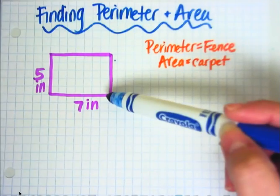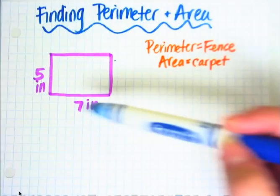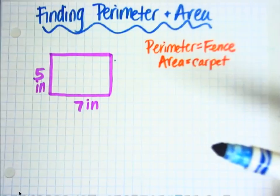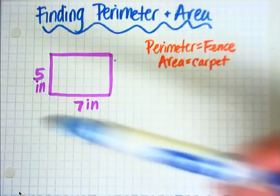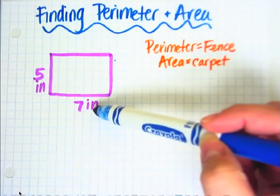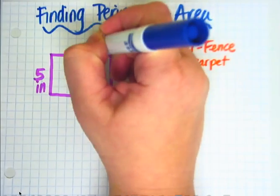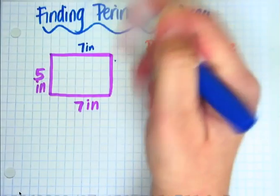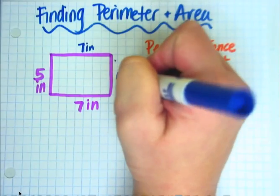So this is our rectangle. The dimensions are 5 inches by 7 inches. Since we know about rectangles, we know that seeing the 7 here means that the other side is 7 inches and the 5 here, the other side is 5 inches.